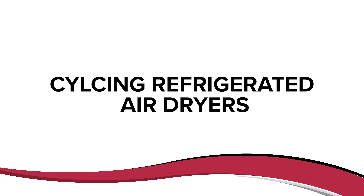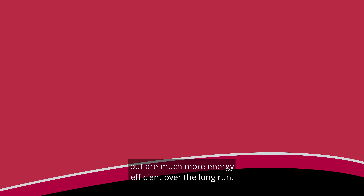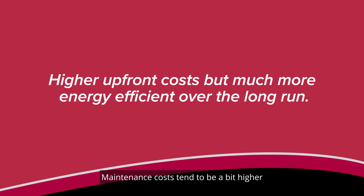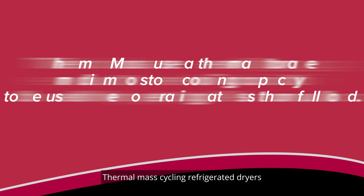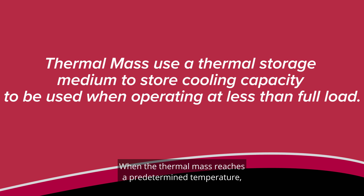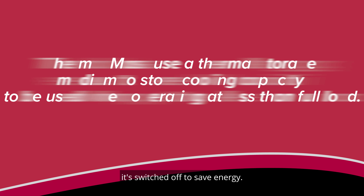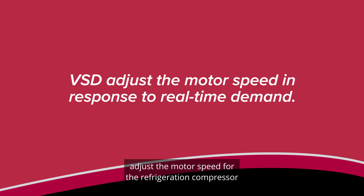A cycling refrigerated air dryer reduces energy by cycling on and off in response to demand. These dryers cost a bit more upfront, but are much more energy efficient over the long run. Maintenance costs tend to be a bit higher than for non-cycling refrigerated dryers due to their increased complexity. There are three types of cycling refrigerated compressed air dryers. Thermal mass cycling dryers use a thermal storage medium to store cooling capacity for use at less than full load. Digital scroll cycling dryers cycle the refrigeration compressor on and off in response to demand — either operating at full capacity or no capacity. Variable speed drive refrigerated air dryers adjust the motor speed for the refrigeration compressor and condenser fan in response to real-time demand.